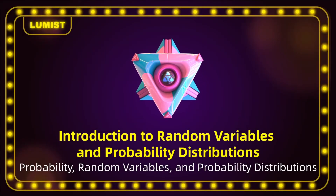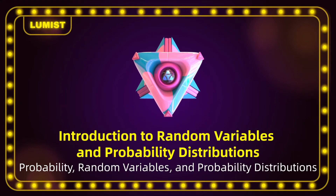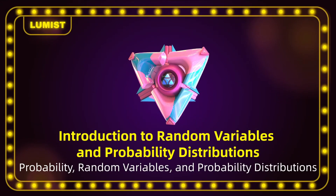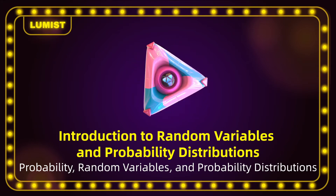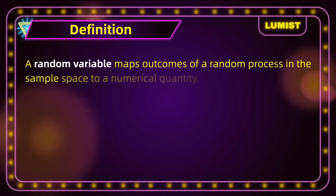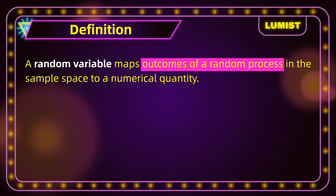Today we are going to talk about random variables. More specifically, what they are and what they do. We're also going to discuss the types of random variables. The basic definition and function of a random variable is that the random variable maps outcomes of a random process in the sample space to a numerical quantity.